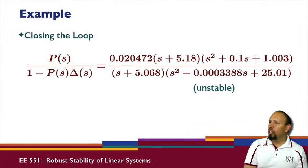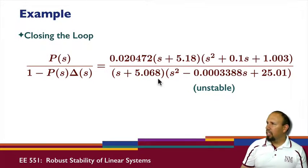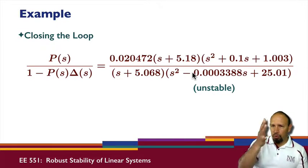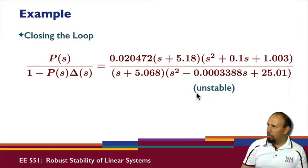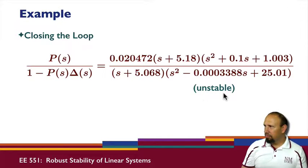When you actually close the loop with those two, we have P over 1 minus P delta. This is what we get. We see because of this minus sign our system is indeed unstable. Notice that this is really small, which means we're really close to the imaginary axis, but yet it's still unstable.